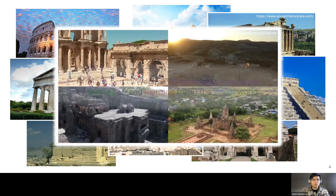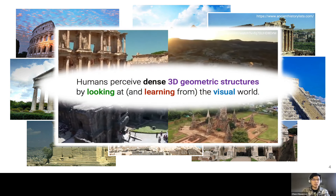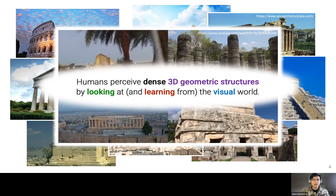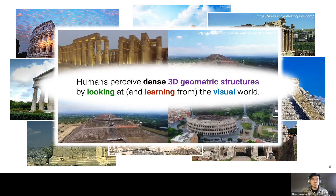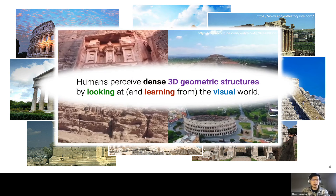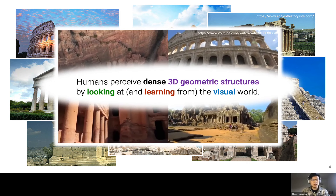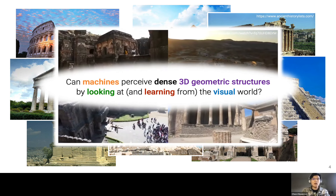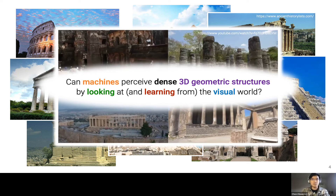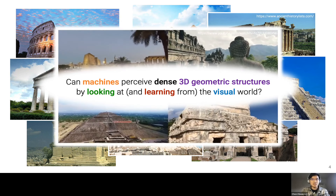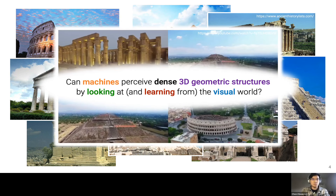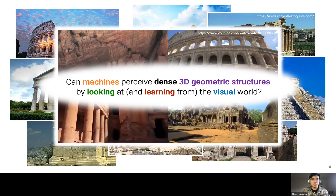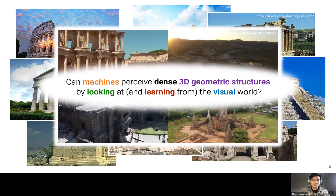We as humans are able to perceive dense 3D geometric structures just by looking at and learning from the world we see through our eyes. My PhD thesis aims to answer the question: can we allow machines to do the same? How can we enable AI systems to learn to perceive dense 3D geometric structures from abundant sources of image and video data?